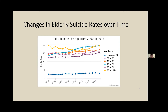Theories about why the middle age group caught up with the oldest age group include increased income inequality, poor economic opportunities where people can't retire, and increasing rates of alcohol use and opiate use in this age group. But for many years it really was the oldest age group that had the highest rate of suicide in the U.S.